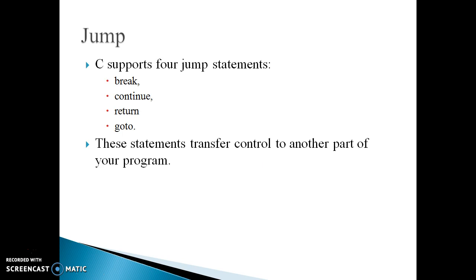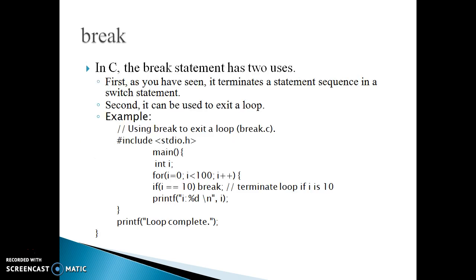These are the number of jump statements. C supports four types of jump statements: the first one is break, second is continue, third is return, and then goto. These statements transfer control to another part of your program.